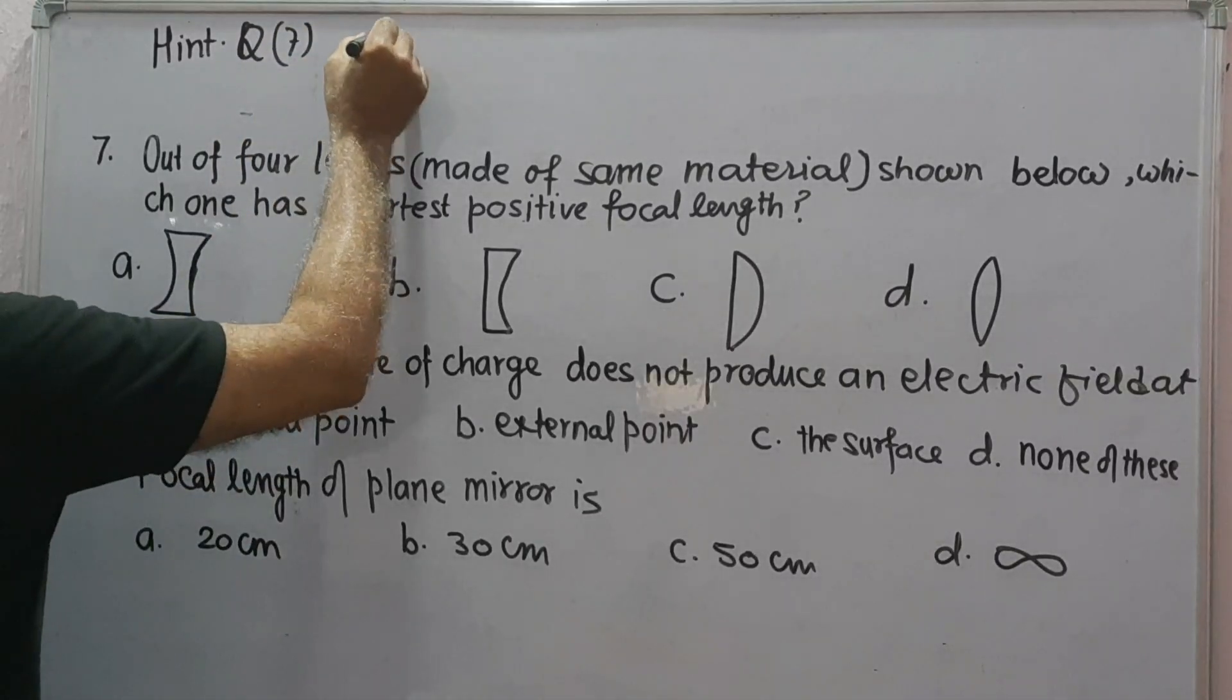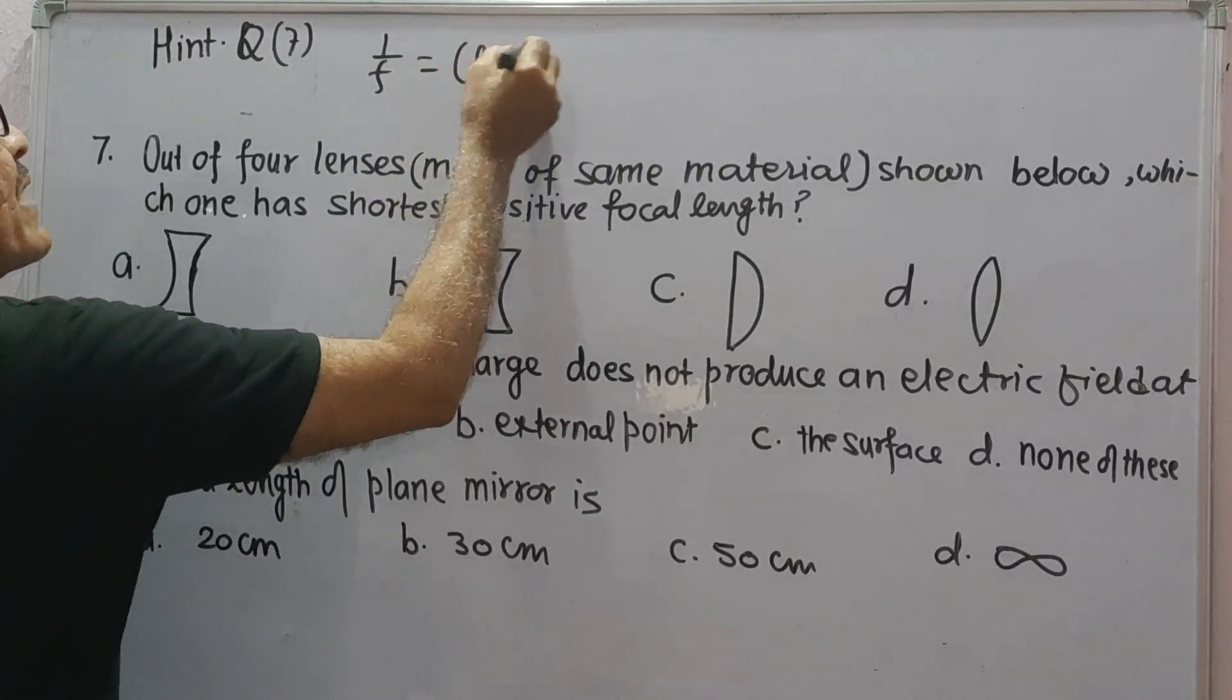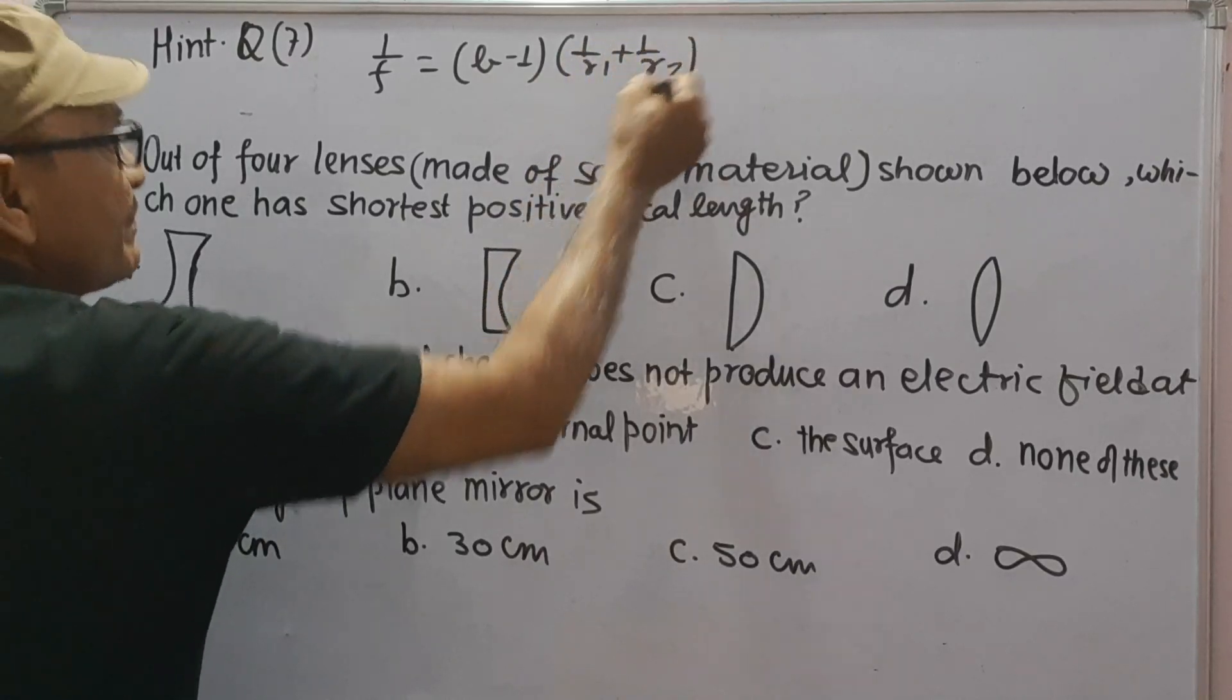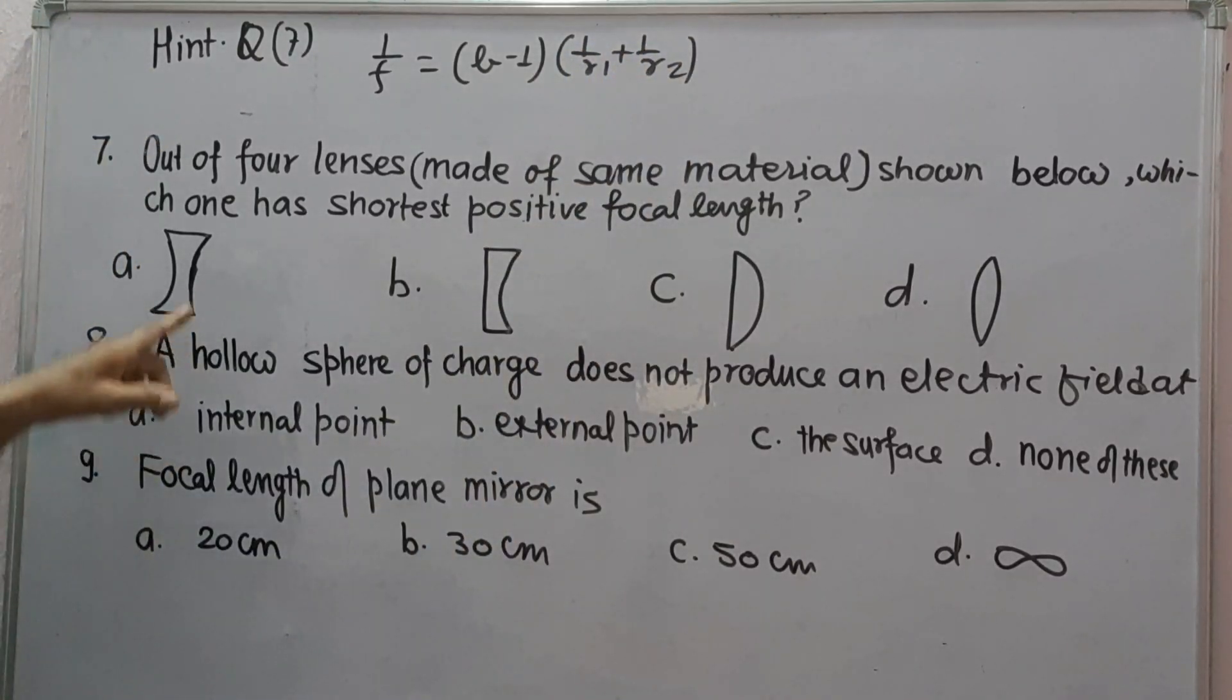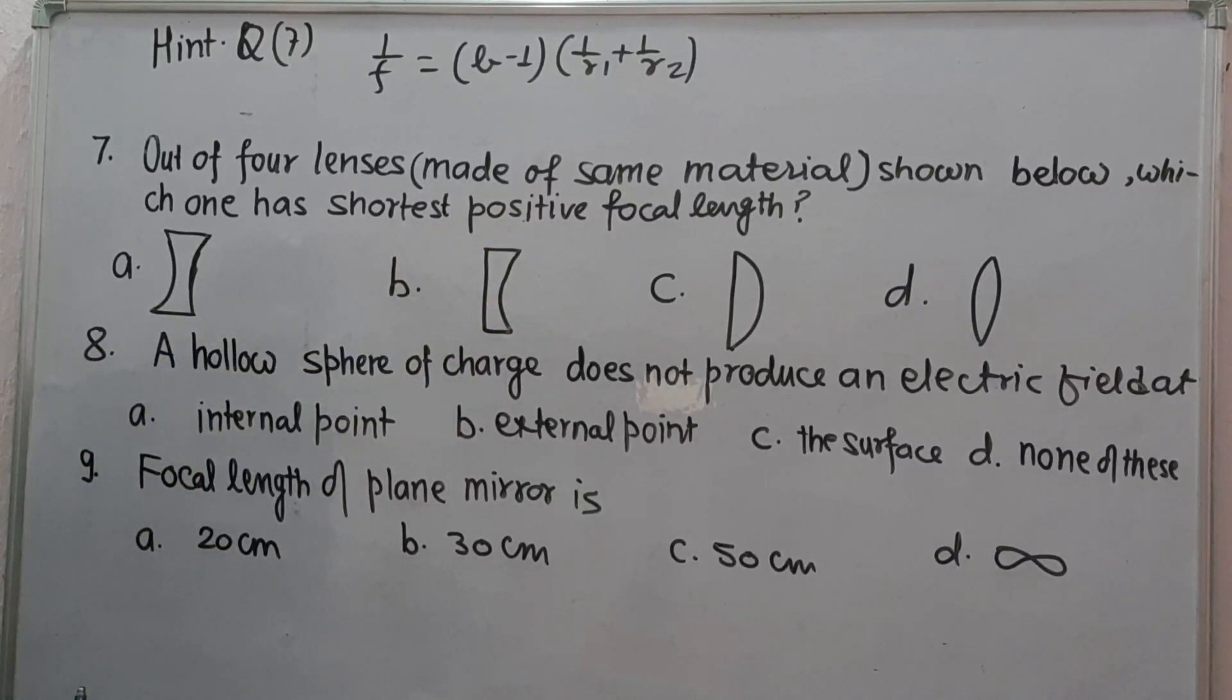From lens maker formula, 1 upon F is equal to mu minus 1 into 1 upon R1 plus 1 upon R2. Therefore, options A and B have concave surfaces, therefore they will give negative focal length.